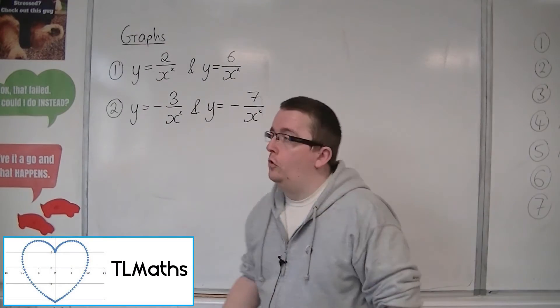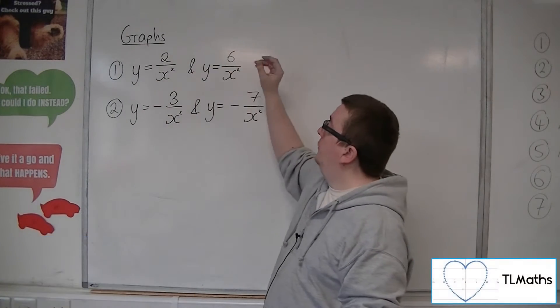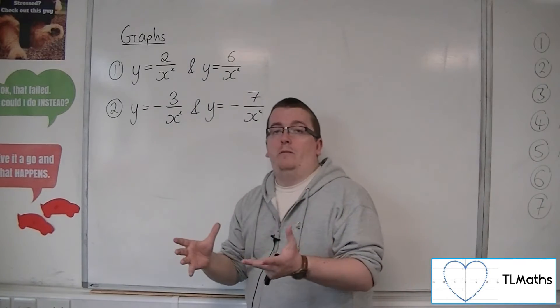Using the techniques from before, what we want to do in this video is to superimpose y equals 2 over x squared and y equals 6 over x squared onto the same graph.